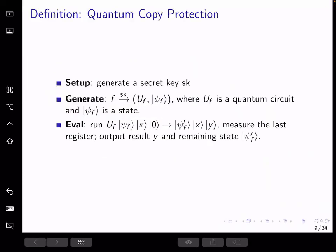Firstly, we take a look at the basic algorithms of a quantum copy protection scheme. The setup algorithm generates a secret key. The generation algorithm takes in the function f we want to copy protect and the secret key,